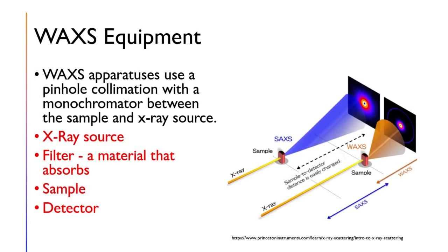Now let's get into some of the equipment and apparatuses often used with this measurement technique. Wide-angle diffraction apparatuses often use pinhole collimation with a monochromator between the sample and X-ray source, as seen in the figure on the right detailing the X-ray source, sample, and detector. Filters are also often used to absorb incoming X-rays and filter out unnecessary alpha or beta lines.